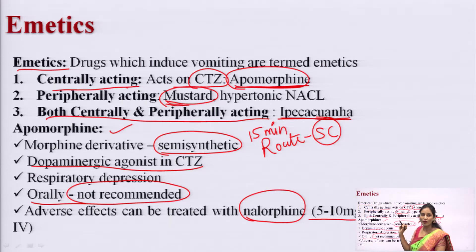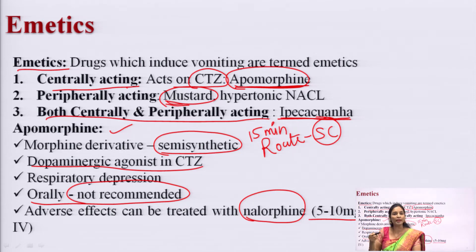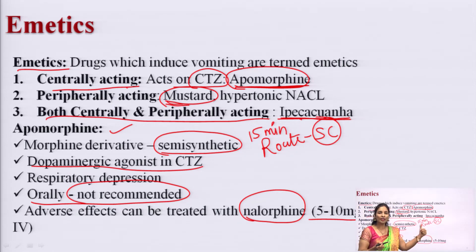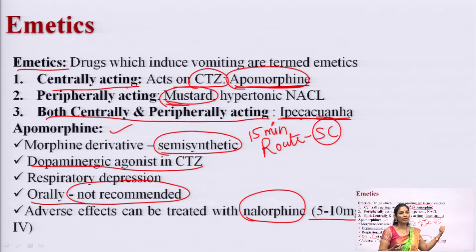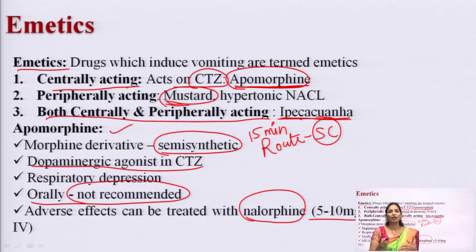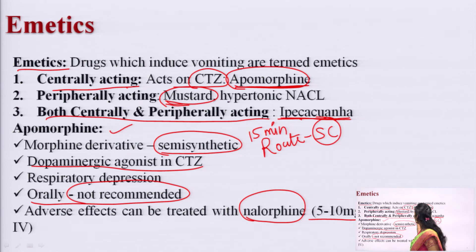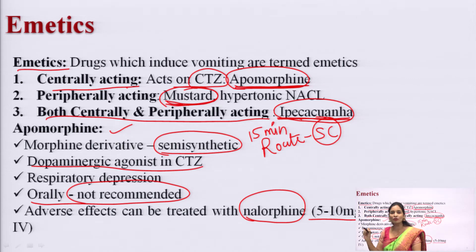Ipecacuanha is a drug which consists of an alkaloid named emetine. This emetine can induce vomiting. Relatively, ipecacuanha is safe to give to infants. In any condition where an emetic drug needs to be given, ipecacuanha is the preferred drug as it is relatively safer and can produce vomiting.